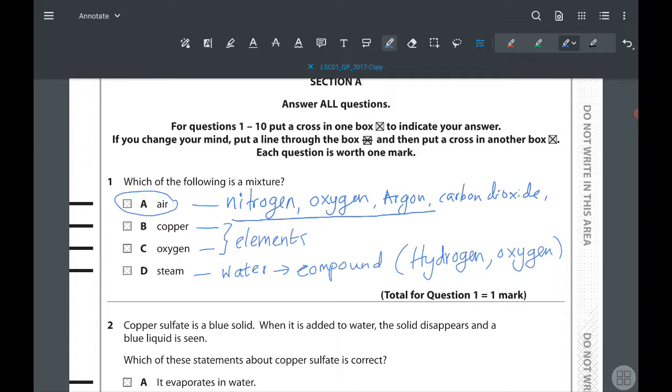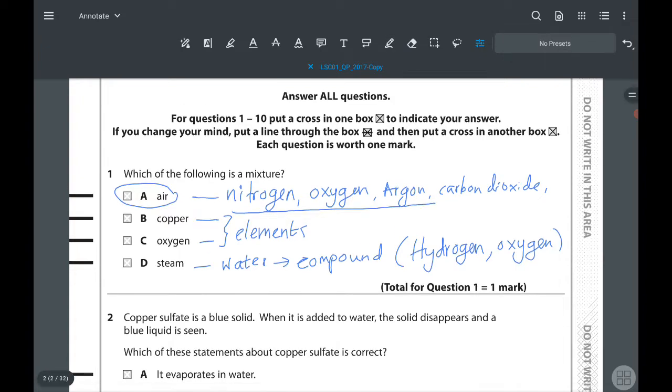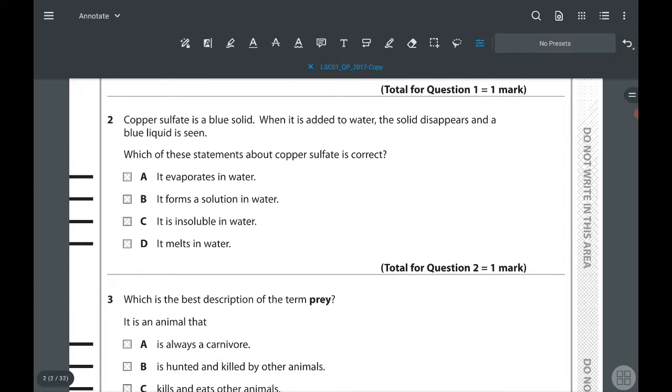Second question: copper sulfate is a blue solid. When added to water, the solid disappears and a blue liquid is seen. Which statement about copper sulfate is correct? It forms a solution in water. If it evaporates, the particles would be leaving the solution. If it's insoluble, we won't see the color. So it forms a solution in water.